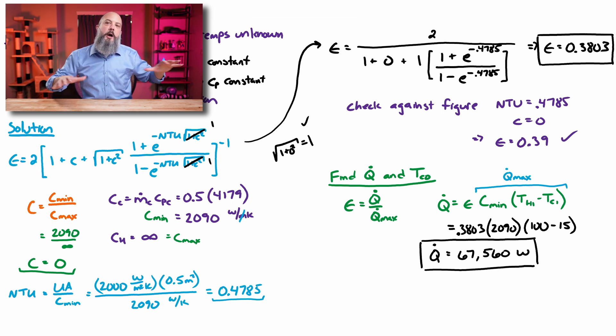That maximum amount of heat that this cold flow could absorb times the 38% effectiveness shows how much heat it actually does absorb. Only 38% of that maximum, which comes out to be about 67,000 watts or about 67 kilowatts.